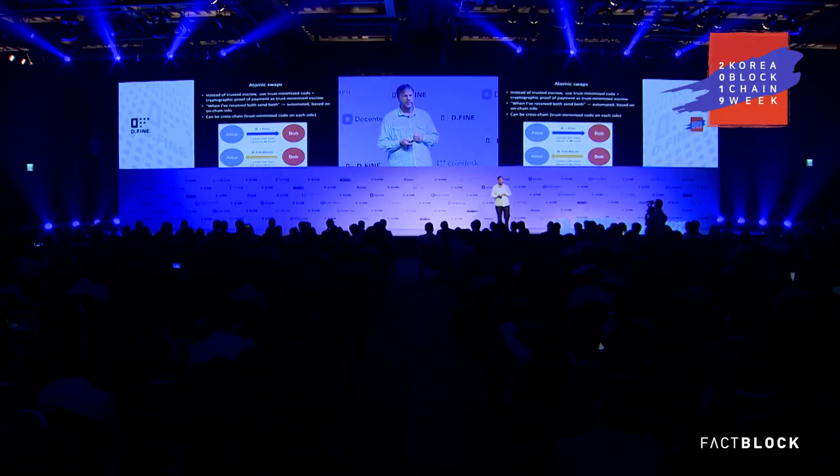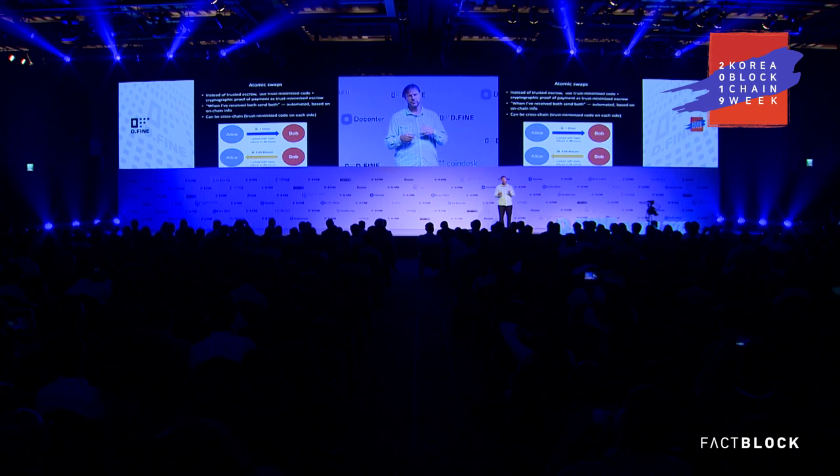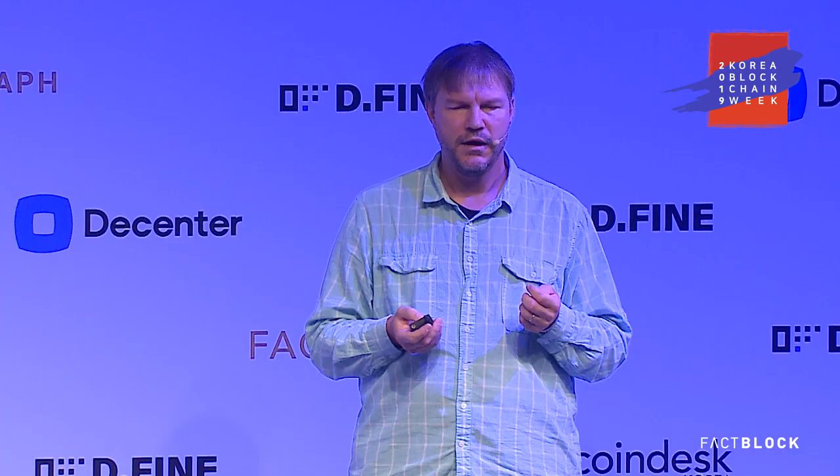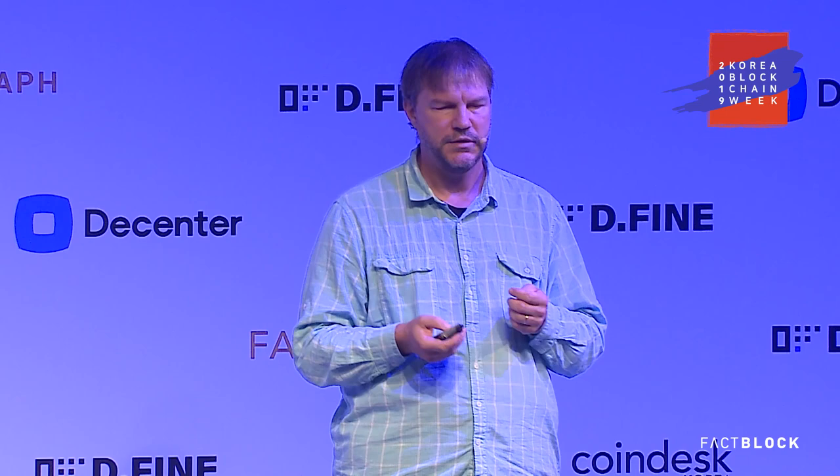Instead of a trusted escrow, atomic swaps use trust-minimized code plus cryptographic proof of payment as your trust-minimized escrow, rather than an actual trusted third party. When the smart contract receives both parties' actions, it sends both automatically based on on-chain information. Another very interesting feature is it can be cross-chain, because we have this cryptographic proof of payment that either chain can use, if properly programmed.